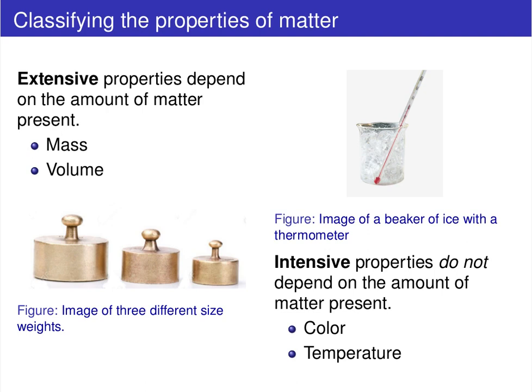That sums up the distinction between physical and chemical changes. Two more terms are used extensively throughout chemistry. The first is an extensive property — a property that depends on the amount of matter present. For example, mass: if we have small, medium, and large brass weights, the mass obviously depends on how much copper you have. Similarly, volume depends on the amount of matter present. Both mass and volume are examples of extensive properties.